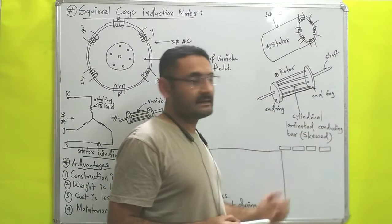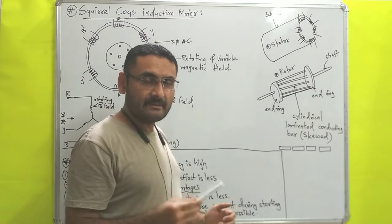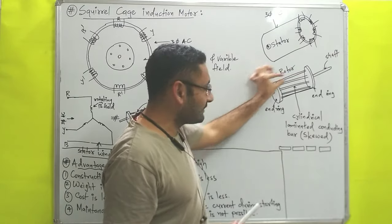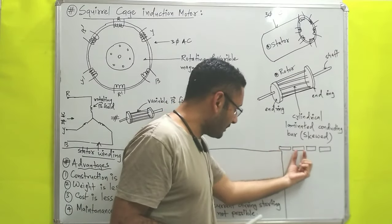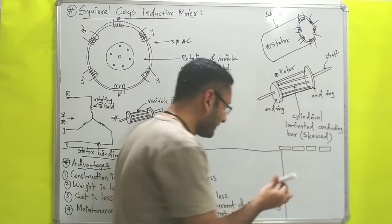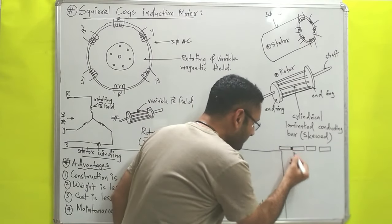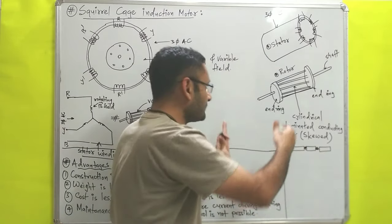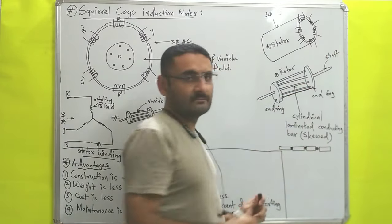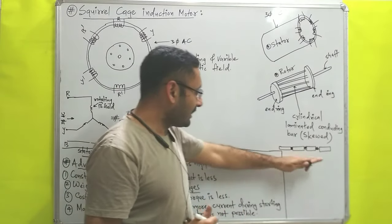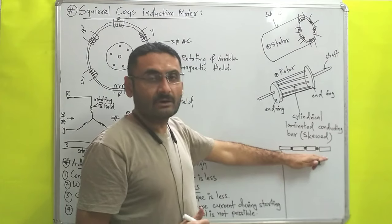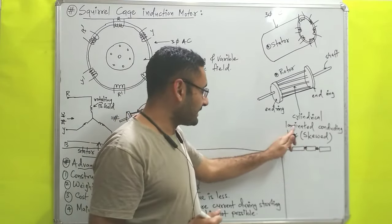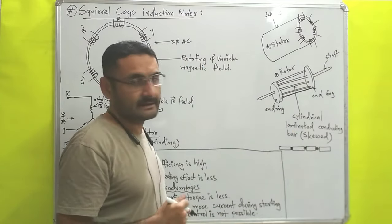Laminated means that the bar is not constructed in a single piece. We take small pieces of the bar and between two pieces we apply an insulating liquid, and after that we connect all of them so we get the long length of the conducting bar. We do this because we want to decrease the eddy current losses. That is the meaning of a laminated conducting bar.